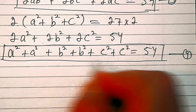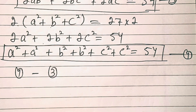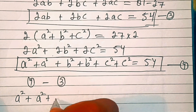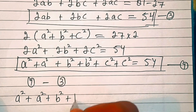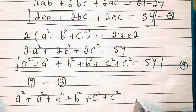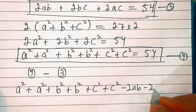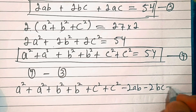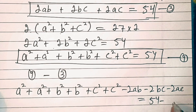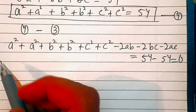Now we have equation three and equation four. We'll subtract equation four minus equation three. So we will have a² + a² + b² + b² + c² + c² − 2ab − 2bc − 2ac = 54 − 54 = 0.